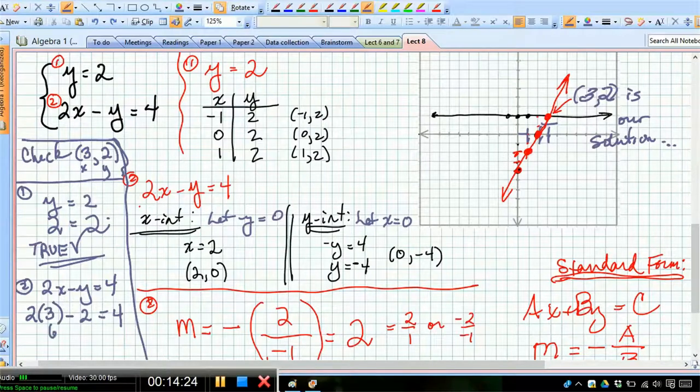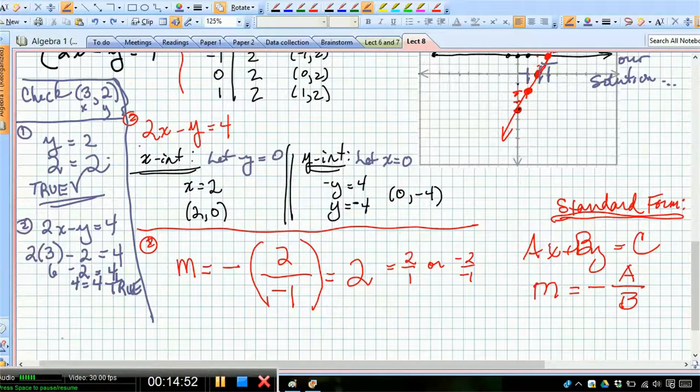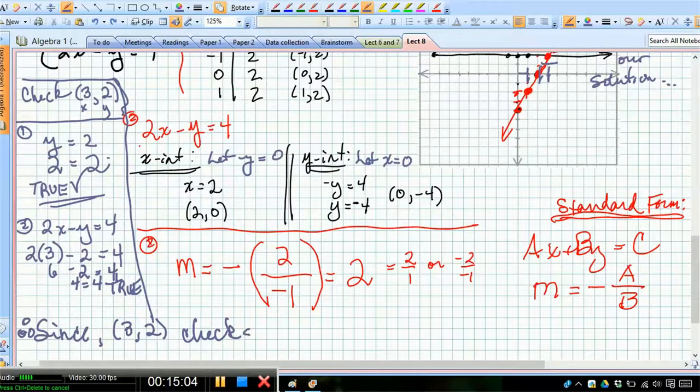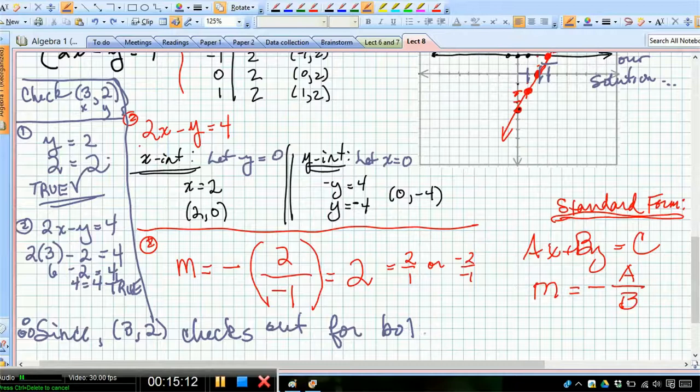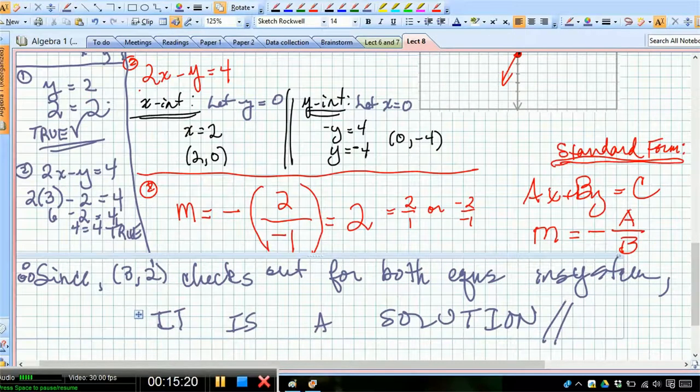Let's simplify this and see what happens. We have 6 minus 2 equal to 4, which is also true. Which means what? It means that 3, 2 is definitely the solution for this system. I'm going to reiterate, since 3, 2 checks out for both equations in the system, it is a solution. So that's good. Let's move along.